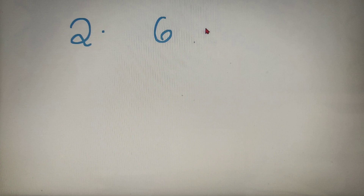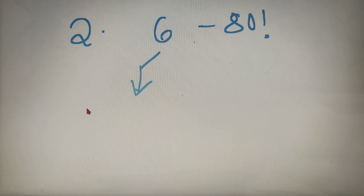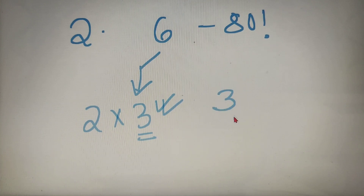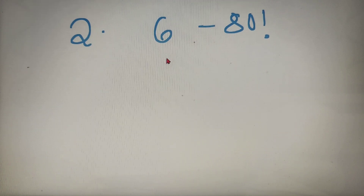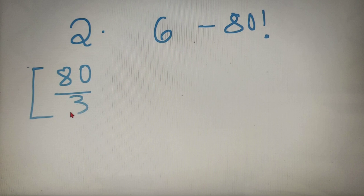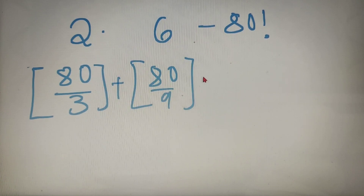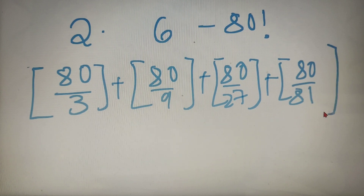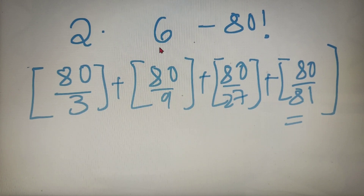Now let's take an example for non-prime numbers. For our second example, we have to find the highest power of 6 in 80 factorial. For non-prime cases, we first prime factorize the number: 6 = 2 × 3. Then we take the highest prime factor, which is 3, and find the highest power of 3 in 80 factorial. So finding the highest power of 6 in 80 factorial is equivalent to finding the highest power of 3 in 80 factorial.